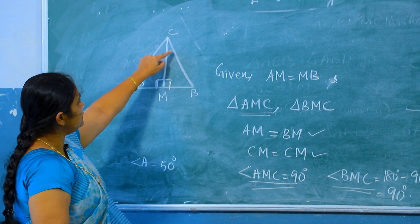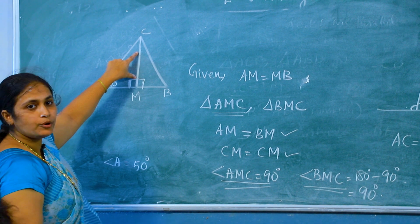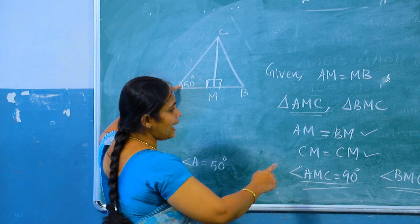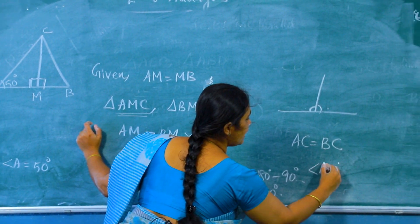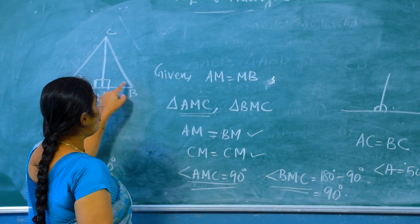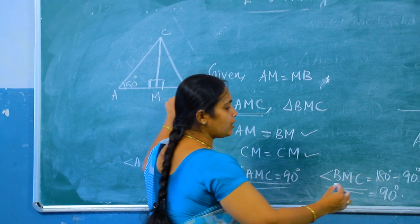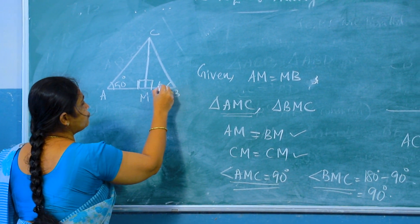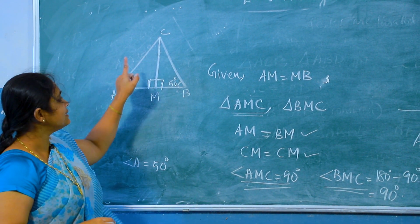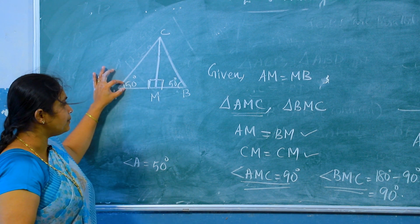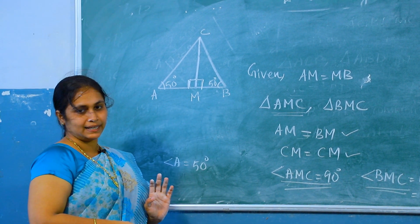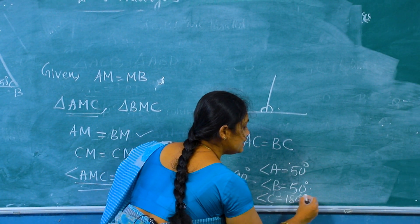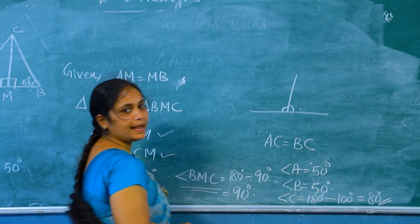Now find angle C. The opposite angle of CM is angle A, and angle A equal to 50 degrees. The opposite angle of CM in triangle BMC is angle B. Therefore, angle B equal to 50 degrees. Angle A plus angle B equal to 50 plus 50 equal to 100 degrees. Therefore, angle C equal to 180 minus 100 equal to 80 degrees.